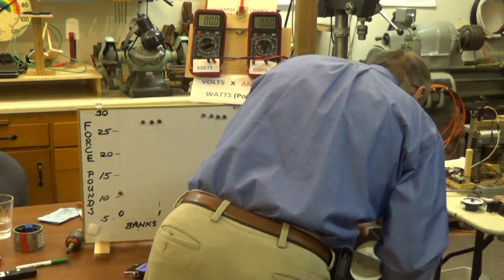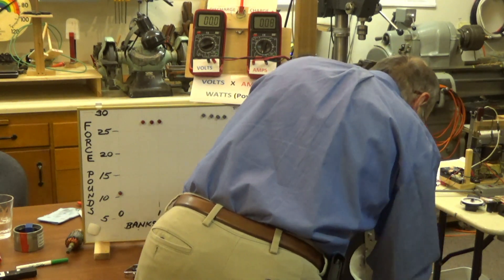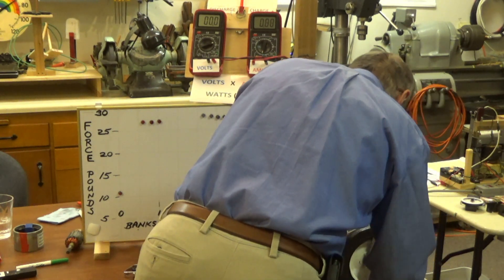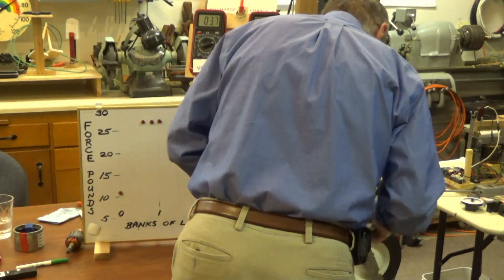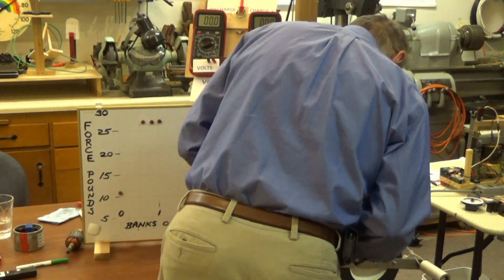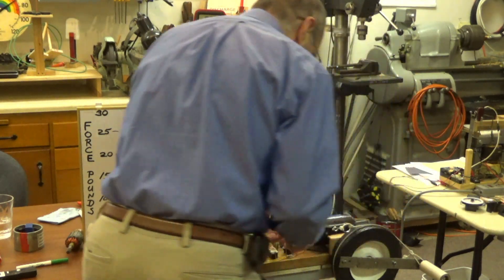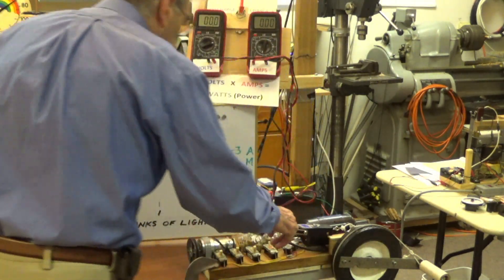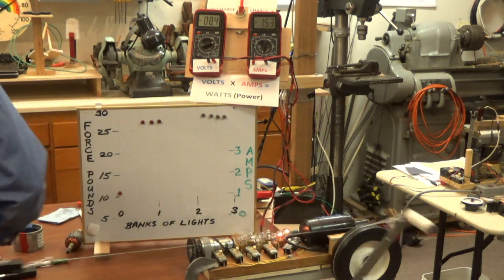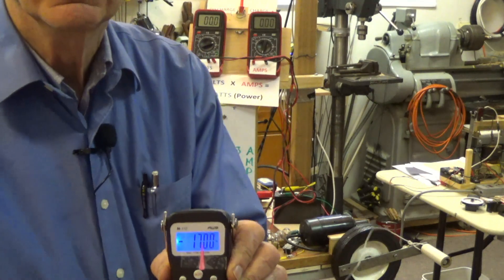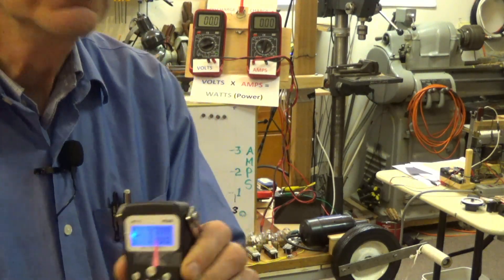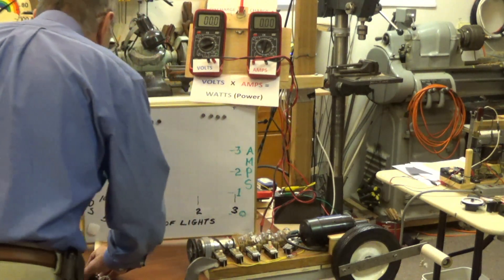Now let's flip on one bank of lights. Wind the cord back on here and let's go back to 10 volts again. I've got 17 pounds at one bank of lights.